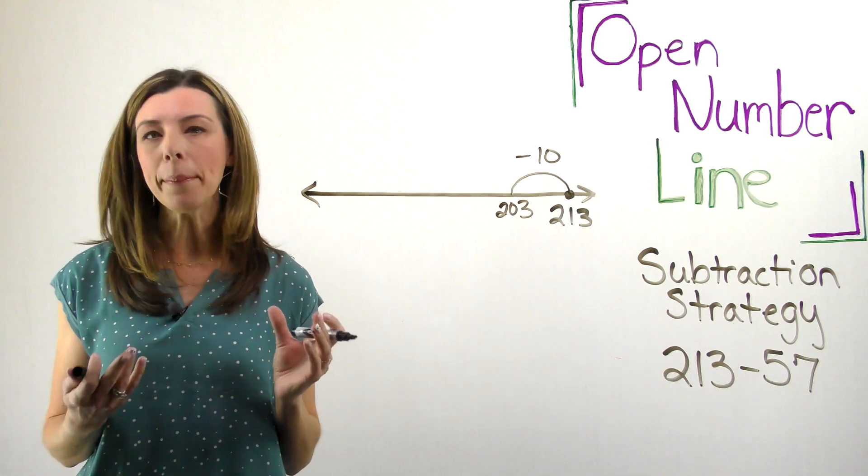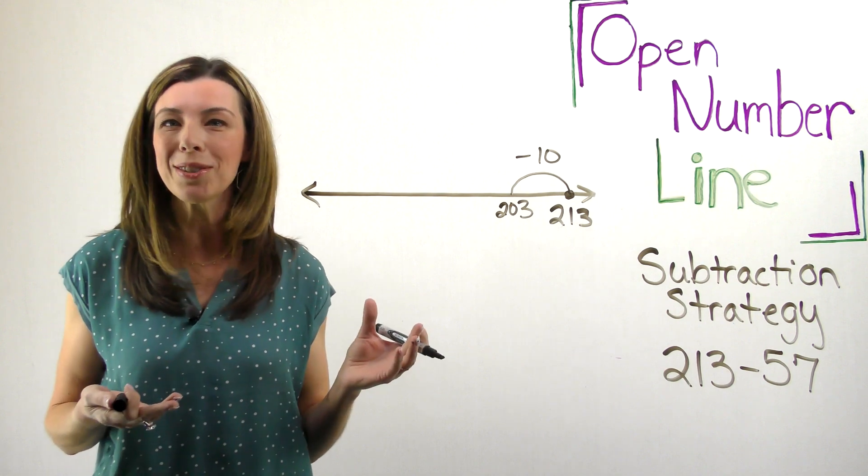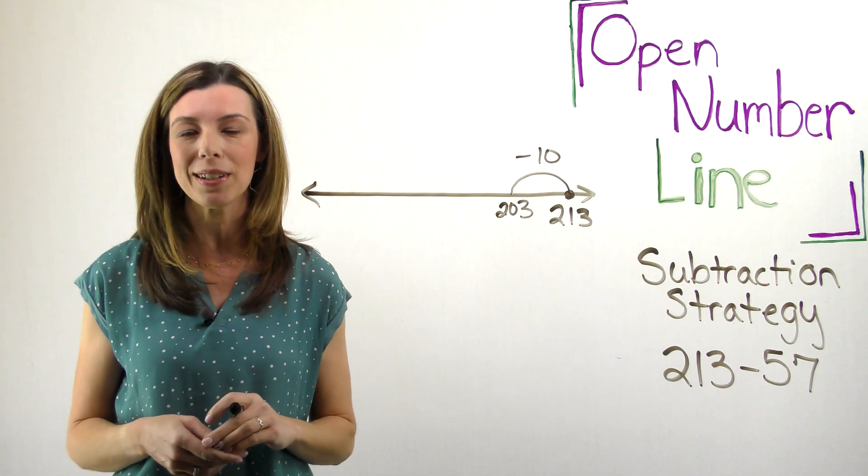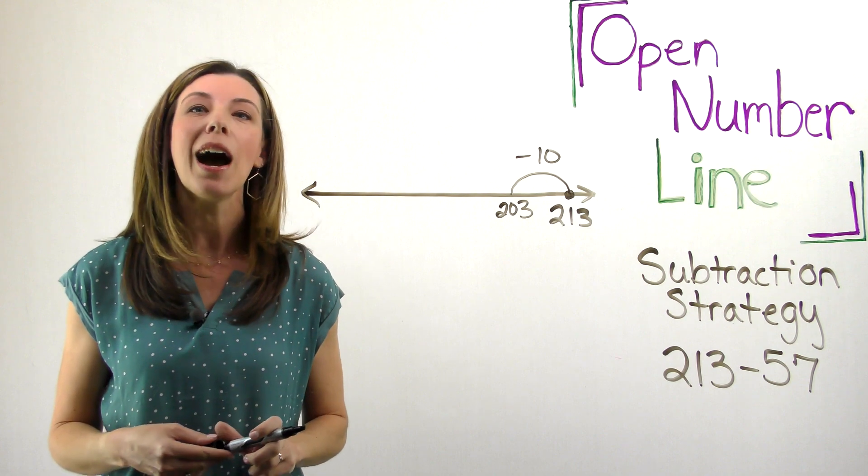So one idea might be to keep subtracting 10 and you might have a student that does that, which is great. This is the beauty of the open number line strategy. We have many different options.